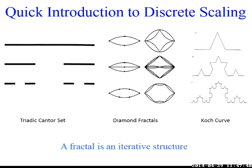Now I'll switch to functions with a discrete scaling invariance. A fractal is an iterative structure. For instance, the Cantor set — you take a segment, divide it into three pieces, delete the middle piece, and continue doing this to get a fractal. Or the diamond fractals, where you connect each two points by a further curve. Or the Koch curve, where you take each segment and grow a further triangle in the middle. These are iterative structures.